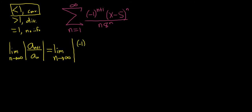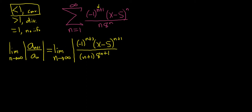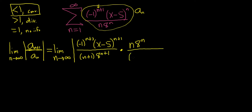So we'll get negative 1 — n+1+1 is n+2 — then x minus 5 to the n+1, over n+1 times 8 to the n+1. That's a_(n+1). We're supposed to divide by a_n, so instead of dividing we multiply by the reciprocal. This entire piece is your a_n, so we flip it: times n times 8 to the n, over negative 1 to the n+1 times x minus 5 to the n.